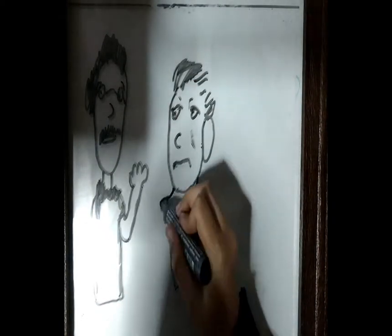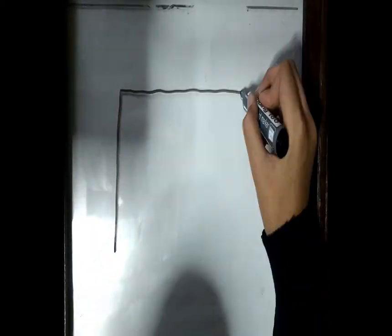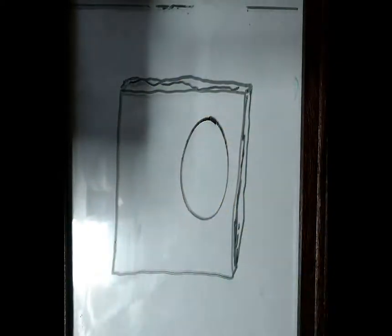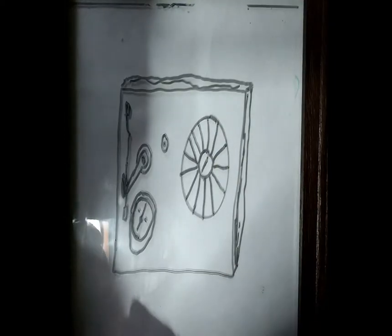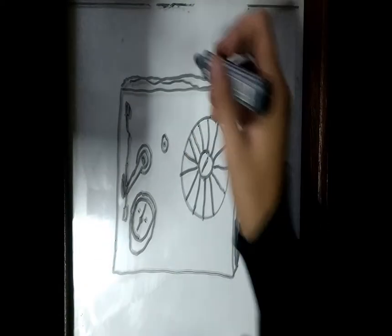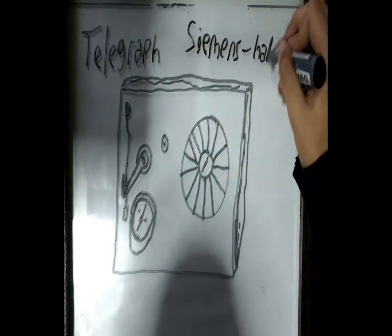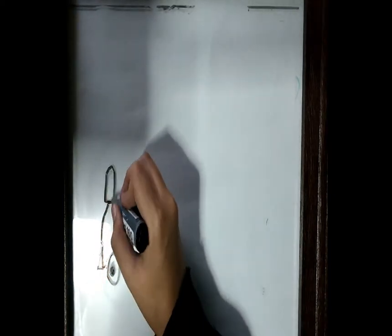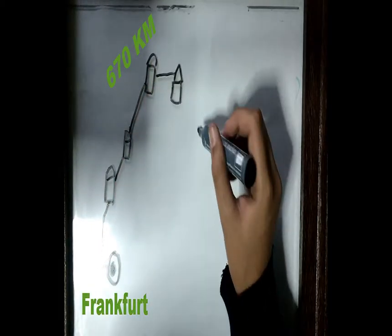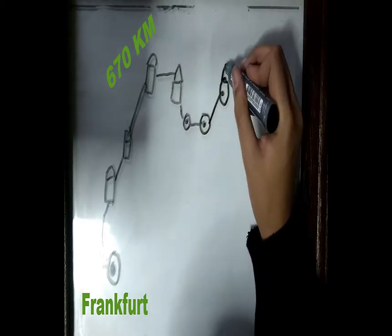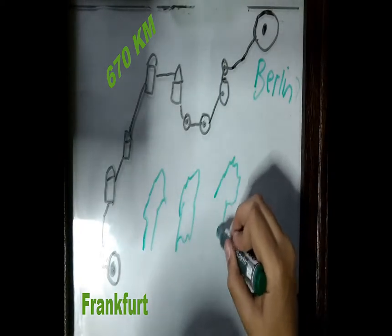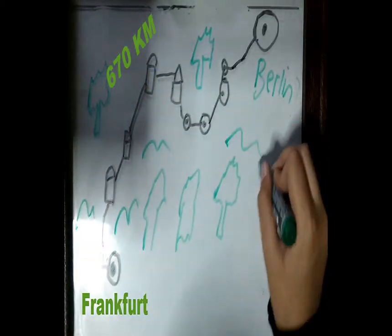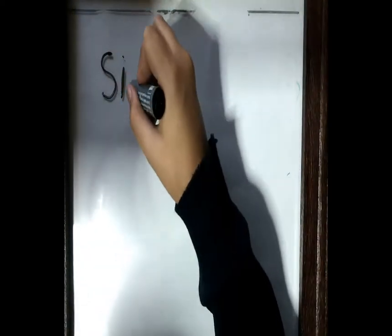Only a test setup convinces Halske of the potential of the new pointer telegraph. The technology makes it possible to transmit messages much faster, a groundbreaking invention that permits a lucrative business. Halske's impeccable design plays a major role in convincing the telegraph commission of the Prussian army to award a contract to the new company for construction of a 670 km line. The objective is a fast connection between Berlin and Frankfurt, where the first German National Assembly has been meeting since May 1848.